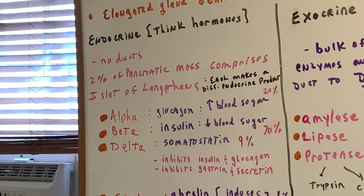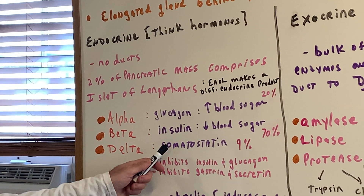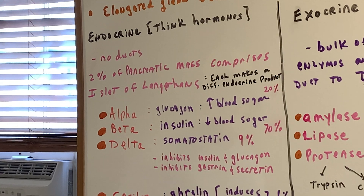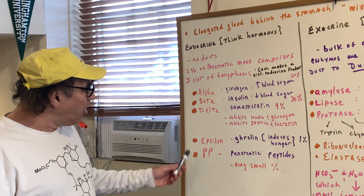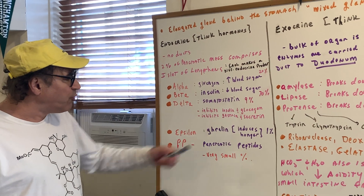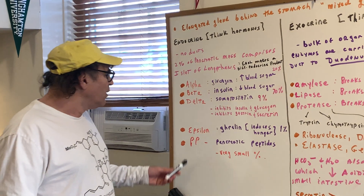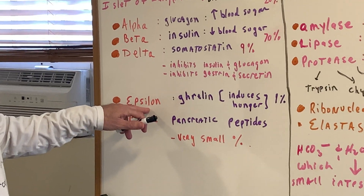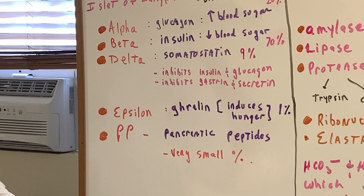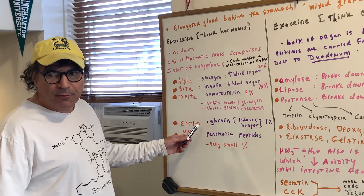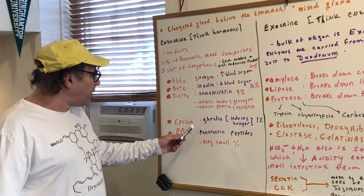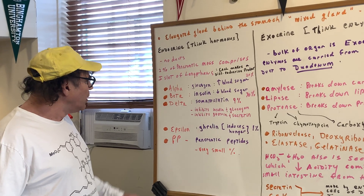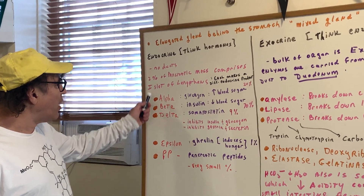Then we have some minor ones — about 9% somatostatin, which is an inhibitor of insulin and glucagon, and also inhibits the hormones gastrin and secretin. Then we have the lesser-known epsilon cells, which make ghrelin, which induces hunger. You've got to be very careful of these gastrointestinal hormones, because ghrelin is not only made by the epsilon cells of the pancreas but also made in the stomach. A lot of these GI hormones are made in other spots. Then we have the pancreatic peptide or PP cell, which makes pancreatic peptides in a very small percentage. So you have these five types of cells that comprise the islet of Langerhans.